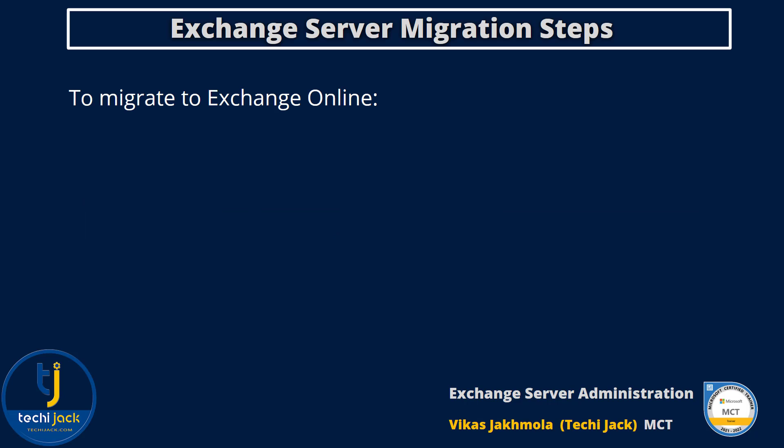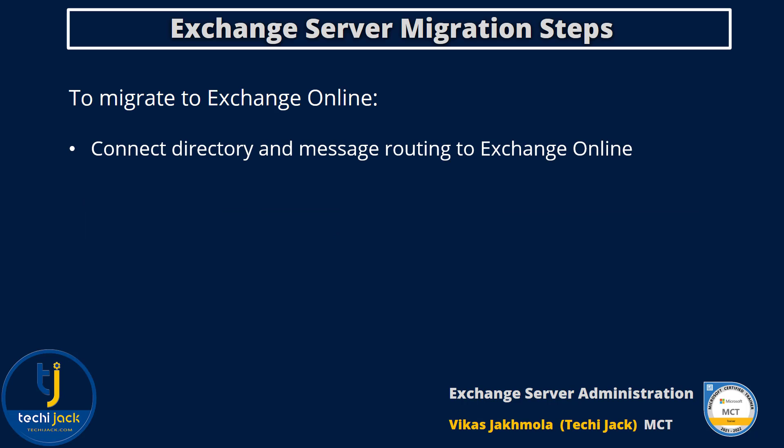So let's see what that general pattern is. First, connect directory and messaging routing to Exchange Online. If you establish a connection to Exchange Online, your existing email directory synchronizes to Exchange Online. Depending on your source directory, you can use the directory synchronization tool to synchronize the Exchange Online directory.